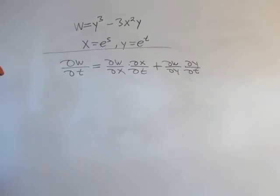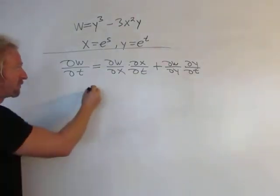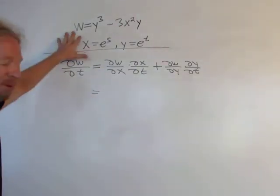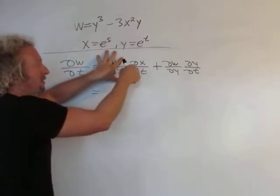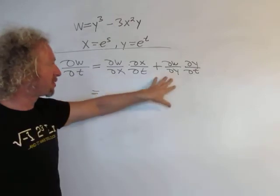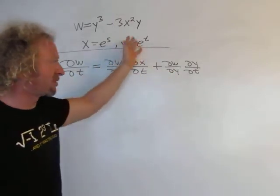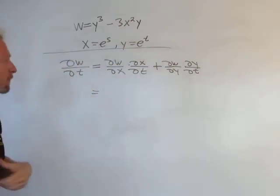And now we're just going to straight up apply the derivative rules. So again, when you're taking the partial with respect to t, you take the partial with respect to x, and then you multiply it by the derivative of the inside with respect to t. Then you take the partial with respect to y, and then you multiply it by the derivative of the inside with respect to t.